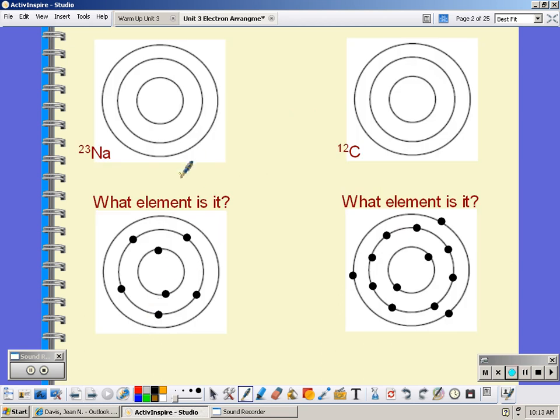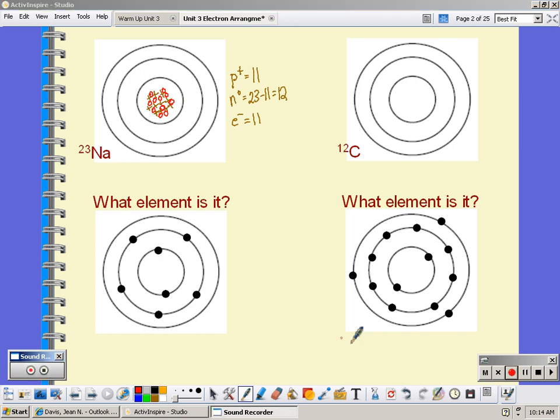If we look at 23Na, sodium is number 11 on the periodic table, so it has 11 protons. 23 minus 11 gives us 12 neutrons. And since it's neutral, it would also have 11 electrons. So we would put 11 protons in the nucleus. And then we would put 12 neutrons.